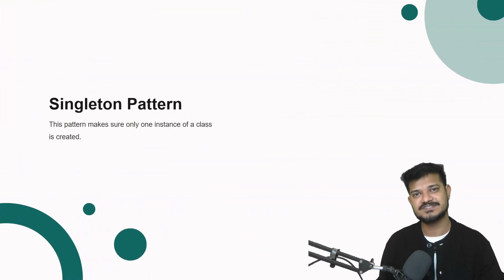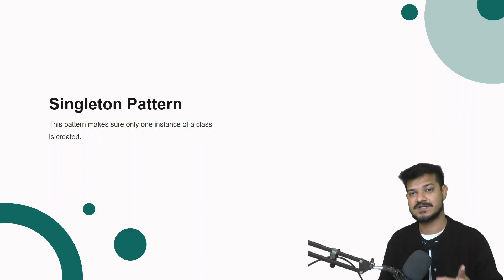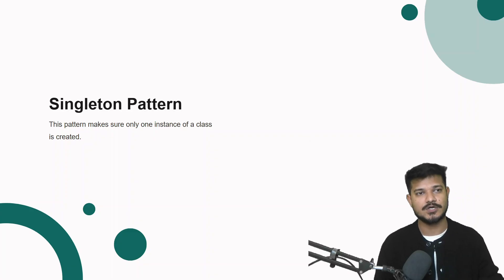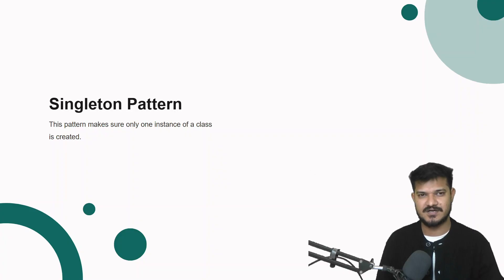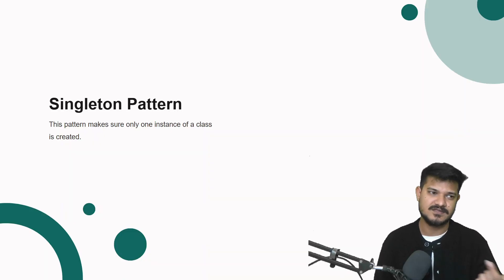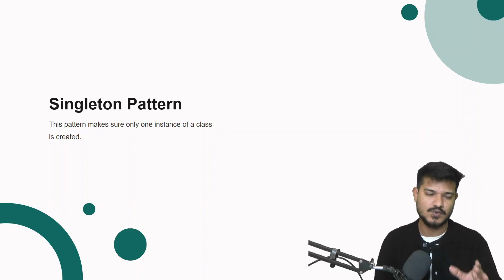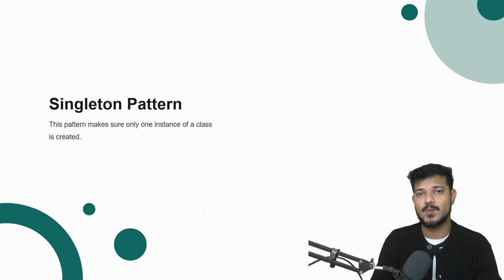The singleton pattern, as the name suggests, makes sure that only one instance of a class can be created. For example, if you have a Data Access Object class that handles talking to the database, you want only one object of that DAO class to be created because you only want one connection to the database. There are many scenarios where the singleton pattern can be used.